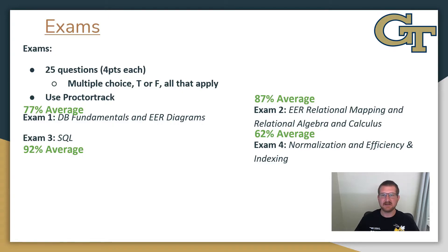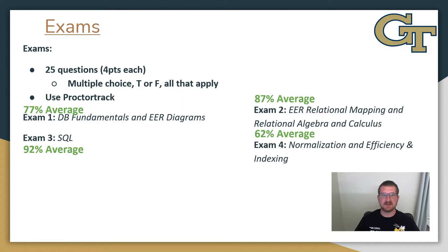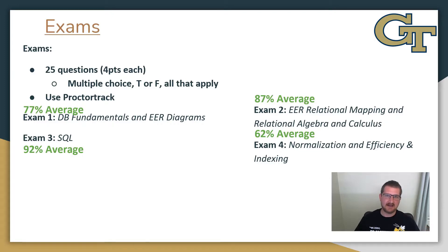One additional note about the tests: exam four is particularly more difficult than any of the other three. As you can see on the screen, the averages for the first three exams are within reasonable ranges — the average for exam three is particularly high. But when you get to exam four, everyone in the class tended to not do too well, so just be aware that it's a bit harder. The tests tend to be a combination of tricky and reasonable questions, but exam four is more tricky than the others.